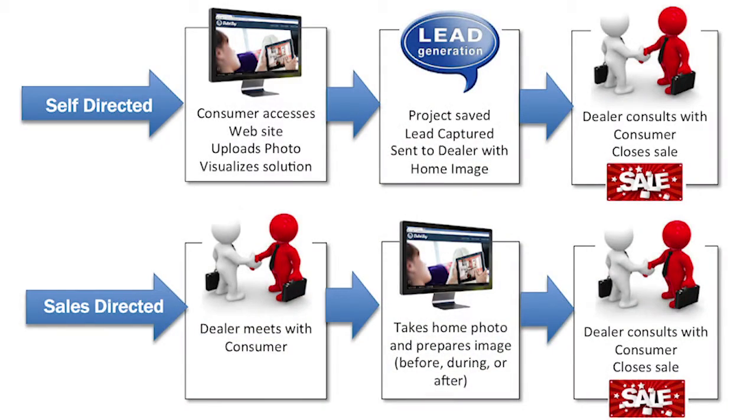The second method is what I call sales-directed. This is when a dealer or sales rep is out in the field working in consultation with the consumer, taking a photo of their home and showing what doors, windows, siding, and roofing is going to look like to make the sale. The advantage is you have a captive audience — you're showing you're a thought leader, allowing them to make decisions based on visual impact. You're able to make sales faster, upsell, and close the sale. We have clients using one or the other or both, and it really depends on how you do your business today.